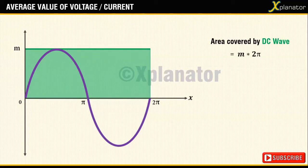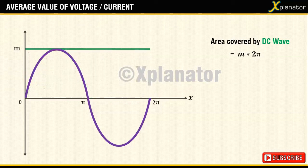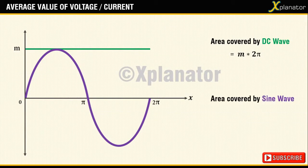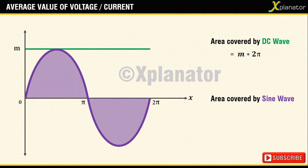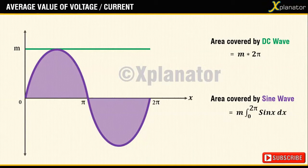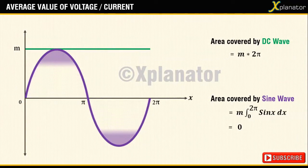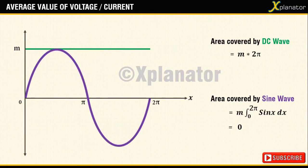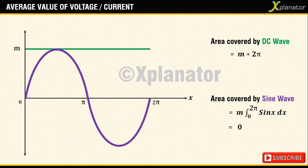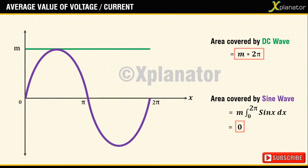Now let us see how much area does an AC signal of the same magnitude occupy. For this, we integrate the sine wave from 0 to 2 pi. Interestingly this area will turn out to be 0 because it is clearly seen that the positive half area will cancel out the negative half area. So we cannot compare these two signals over a time period of 2 pi.